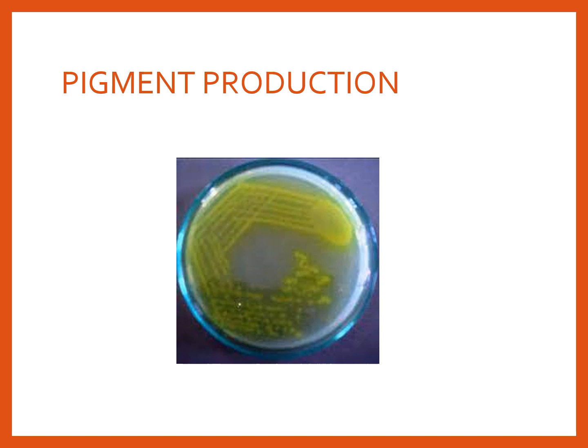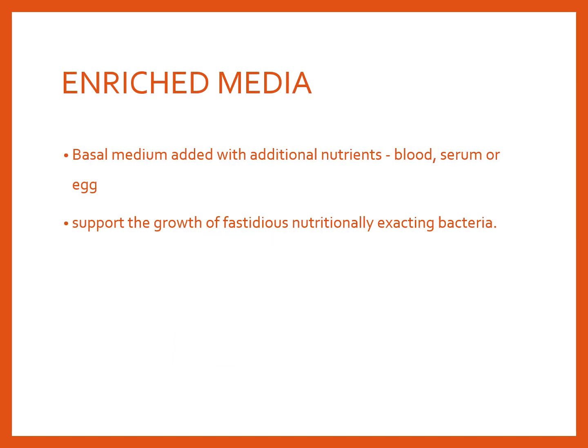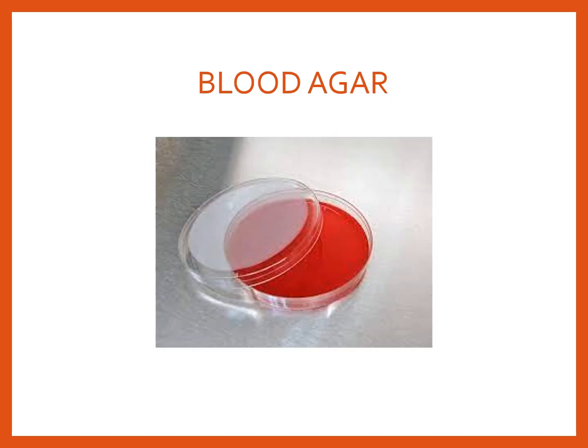You can see the pigment production — notice how the color of the colony is different. Then comes enriched media — basal media with added nutrients like blood or serum depending on organism requirements, supporting growth of fastidious bacteria. When shown a blood agar plate, the answer is: it is enriched media, enriched with blood. To make blood agar, you need nutrient agar as the base, then add blood to it.